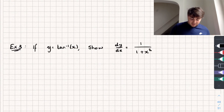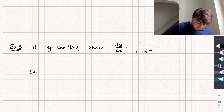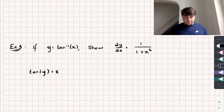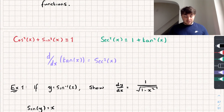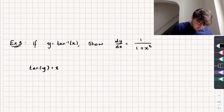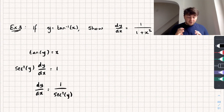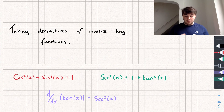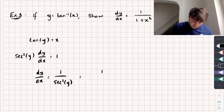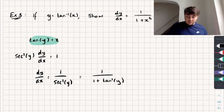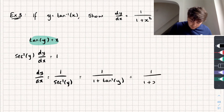For the final example we find the derivative of arctan(x). We rewrite it as tan(y) = x, then apply the chain rule on the left-hand side. Since the derivative of tan(x) is sec²x, the derivative of tan(y) with respect to x is sec²y · dy/dx, and the right-hand side's derivative is 1. Rearranging, dy/dx = 1 / sec²y. Using our last trig identity, sec²y = 1 + tan²y, and since tan(y) = x, tan²y = x². Therefore the derivative is 1 / (1 + x²).